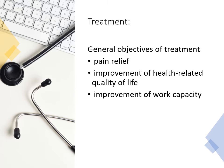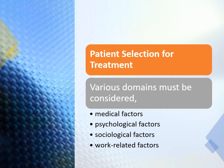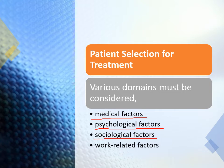Treatment is very variable and depends on many domains. Our main aims are pain relief, improvement of health-related quality of life, and improvement of the patient's work capacity. Factors affecting the treatment decision include medical factors — if the patient has contraindications to surgery, we cannot operate; psychological factors — if the patient is psychologically unstable, they will remain in pain regardless of treatment; and sociological factors — if the patient cannot afford expensive implants or lacks insurance.